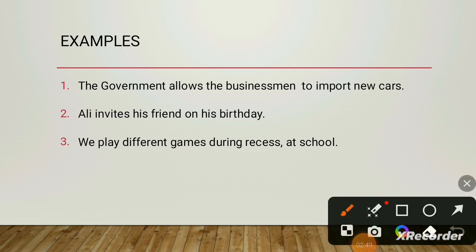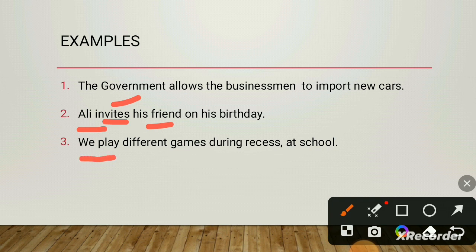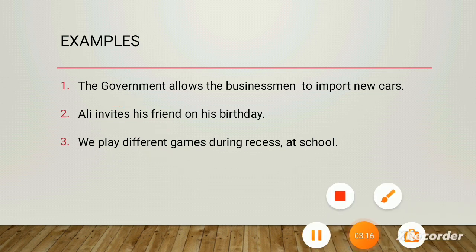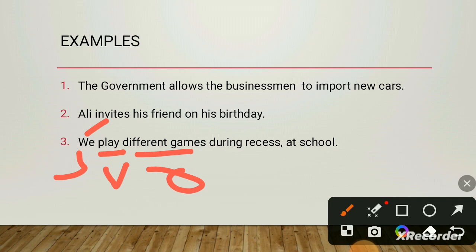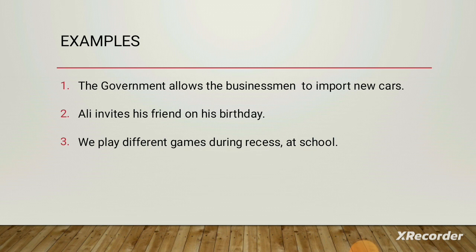The next example: 'Ali invites his friend on the birthday.' Ali is the subject, 'invites' is the verb, and 'his friend' is the object. Ali is active — he is inviting his friend. Third example: 'We play different games during recess at school.' 'We' is the subject, 'play' is the verb, 'different games' is the object. The subject is also active, showing some activity. These are different examples of active voice.